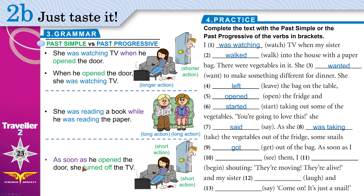'As soon as' — if you see this, use past simple with both actions. 'As soon as I saw them, I began shouting — they're moving, they're alive!' And my sister laughed and said, 'Come on, it's just a snail.' She did two things: laughed and said. Did they happen at the same time? No — she laughed first, then said. We give past simple to both.